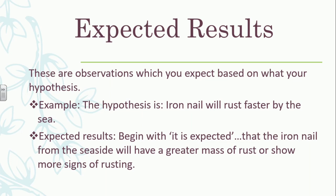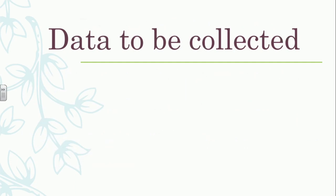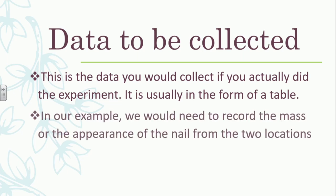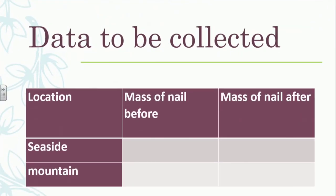The next thing is data to be collected. If you actually did the experiment, what sort of data or evidence would you collect? Usually this is in the form of a table. In our example, we would need to record the mass or the appearance of the nail in the two locations, since that's what we're using to determine where the nail rusts faster. You can see a table here with location — seaside and mountain — and the mass of the nail before the experiment.